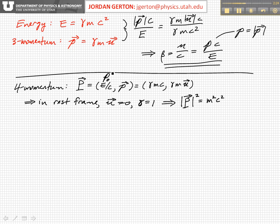So in the rest frame, u equals zero, so gamma equals one. And as we've seen before, the magnitude squared of the four momentum is just equal to m squared c to the fourth, m squared c squared.